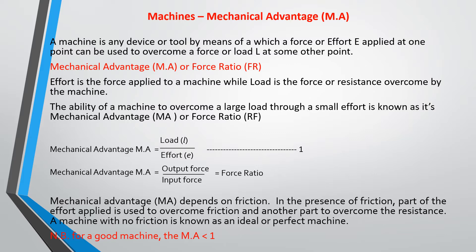A machine is any device or tool by means of which a force or effort applied at one point can be used to overcome a force or load at some other point. For example, your bottle opener — you apply force at one end and it overcomes the load which is the cover of the drink. Machines make work easy for you.